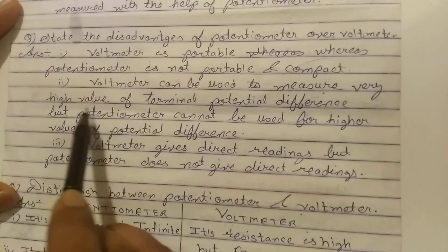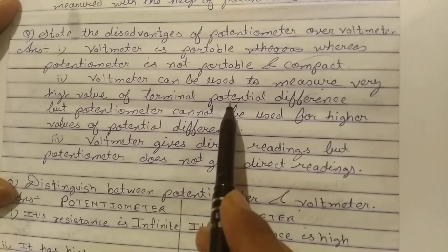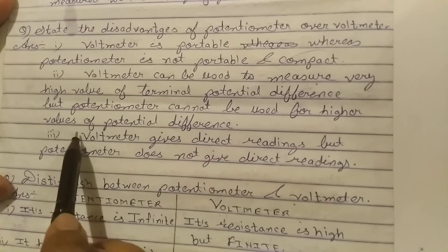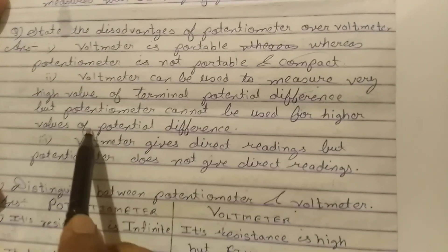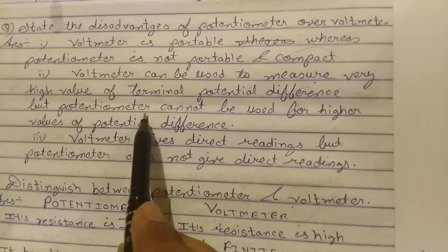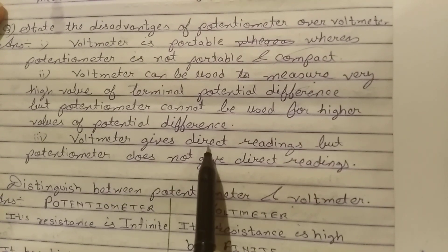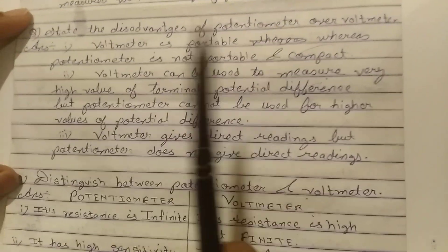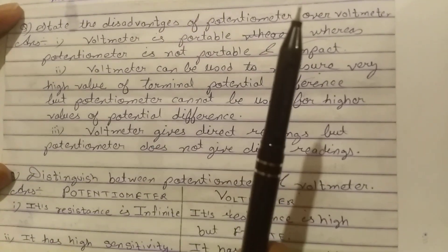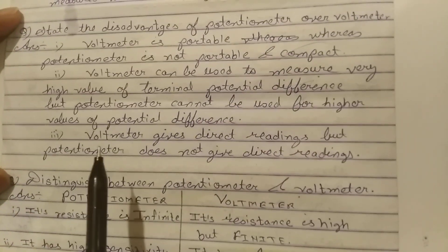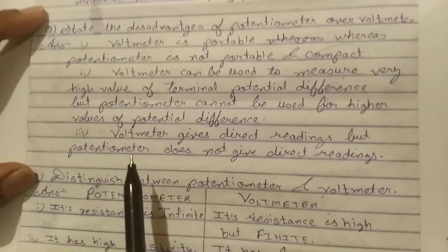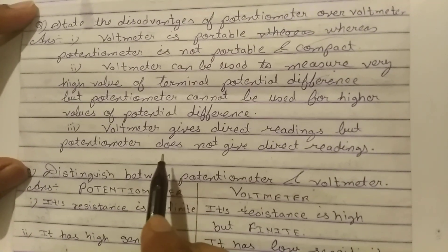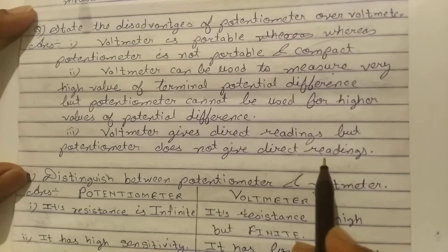The second disadvantage: a voltmeter can be used to measure very high values of terminal potential difference, but a potentiometer cannot be used for higher values — it measures only small values. The third disadvantage: a voltmeter gives a direct reading on the scale with a pointer, but with a potentiometer, to find any voltage reading, we have to perform an experiment — it does not give a direct reading.